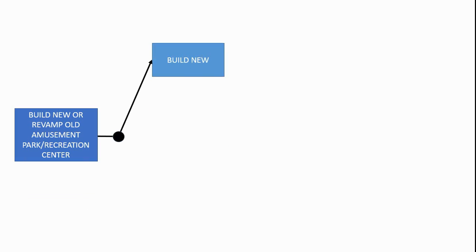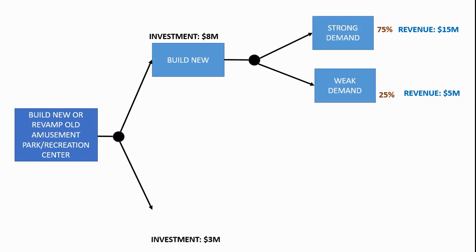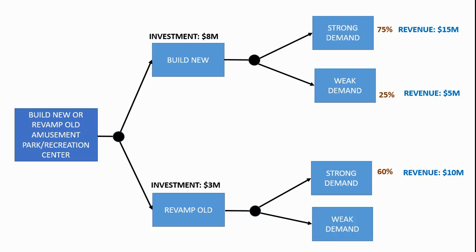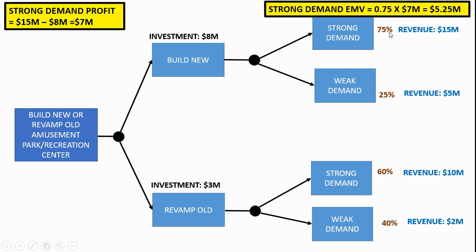So we've got our chance nodes. Build a new center — it could be strong demand or it could be weak demand. Next we draw out the revamp option and then start the math. Strong demand: find the profit — that's $7 million, which is $15 million minus $8 million. After getting the profit, we multiply the probability by the profit — think of it as probability times impact. You do that, you get 5.25. And that is the EMV for the strong demand.